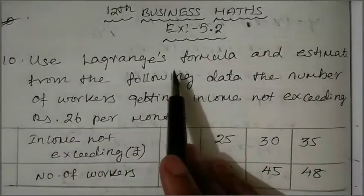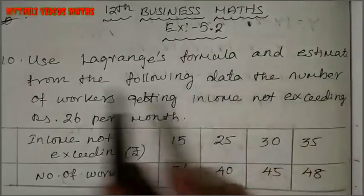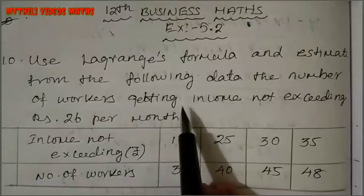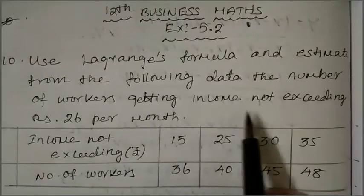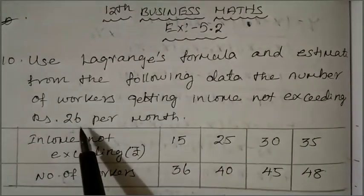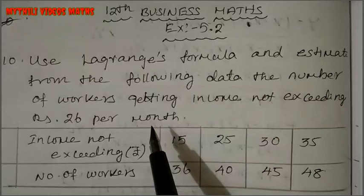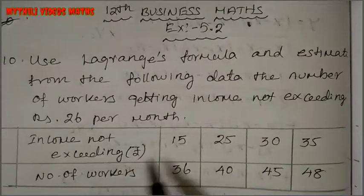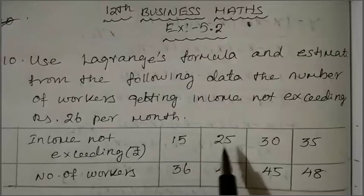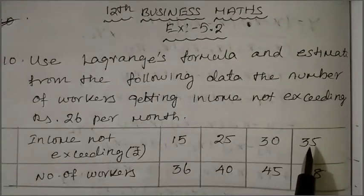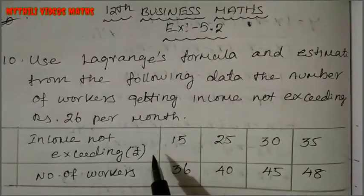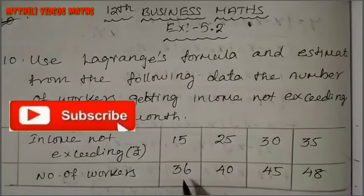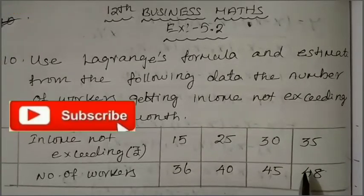Use Lagrange's formula and estimate from the following data the number of workers getting income not exceeding rupees 26 per month. Income: 15, 25, 30, 35. Number of workers: 36, 40, 45, 48.